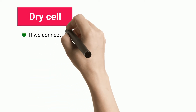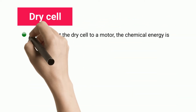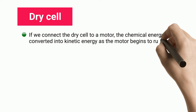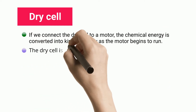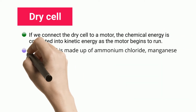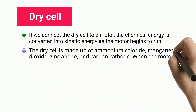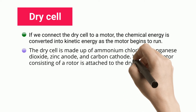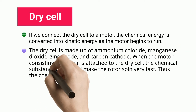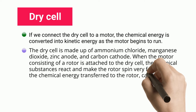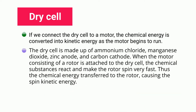Dry Cell. If we connect the dry cell to a motor, the chemical energy is converted into kinetic energy as the motor begins to run. The dry cell is made up of ammonium chloride, manganese dioxide, zinc anode, and carbon cathode. When the motor consisting of a rotor is attached to the dry cell, the chemical substances react and make the rotor spin very fast, thus the chemical energy is transferred to the rotor causing spin kinetic energy.